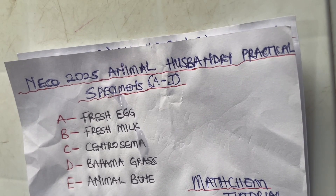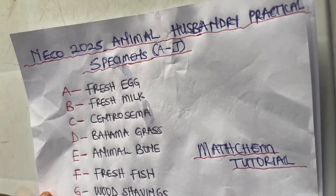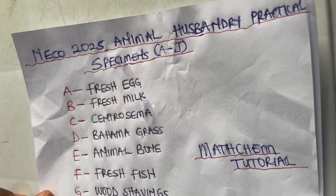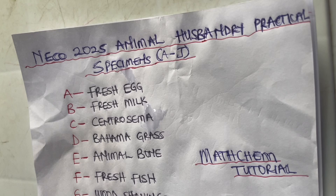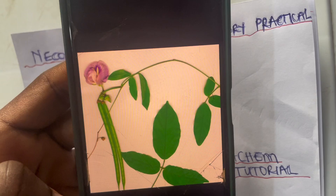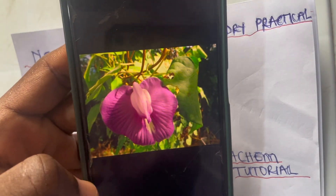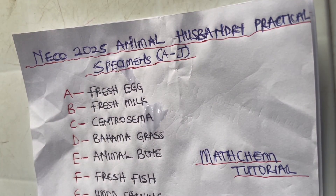Specimen C is centro semen. Let me show you how this plant looks like on my phone. This is centro semen — this is one version of it, and here is another version. This plant is also called butterfly pea.